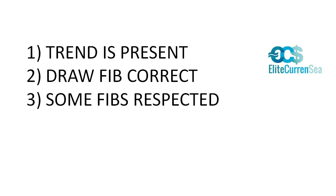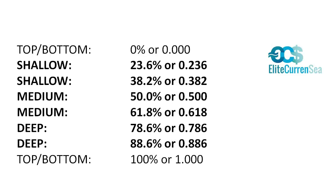Let's now talk about shallow and deep Fibonacci levels. Here is a summary of what I consider shallow, medium, or deep Fibonacci retracement levels. Zero and 100 are obviously the top or bottom of the move. The 23.6 and 38.2 are shallow Fib levels, meaning the retracement has not gone deep. Medium is somewhere between the 50 and 61.8. A deep retracement level — meaning price has gone very far against the previous trend — would be the 78.6 and the 88.6.